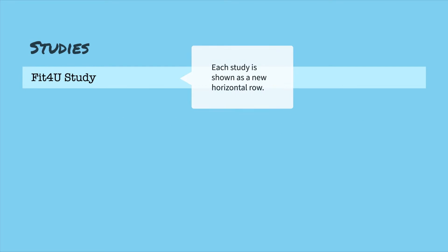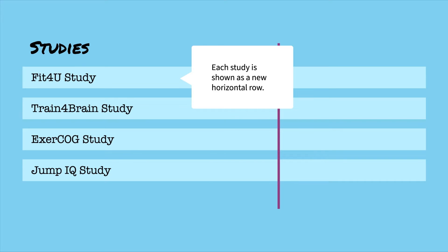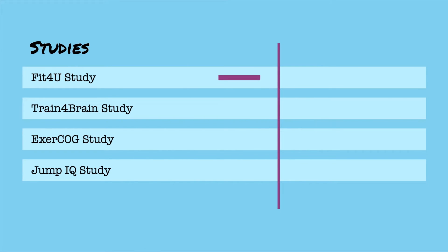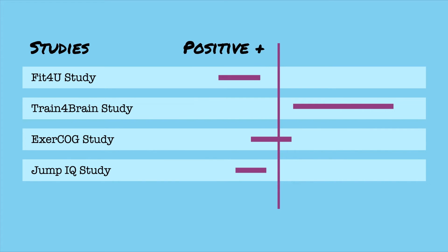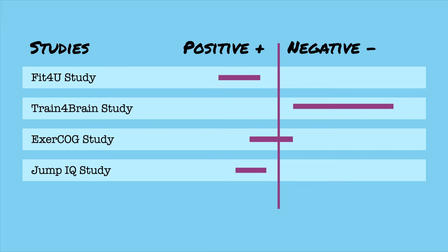Each study is shown in a new horizontal row. The results of each study are then plotted on the chart. If the intervention had a positive effect, the results appear on the left. If the intervention had a negative effect, the results appear on the right. Results which touched the line mean the intervention had no effect.